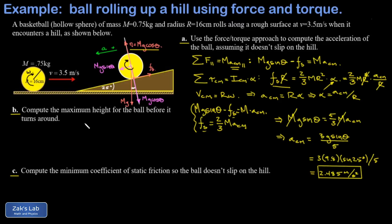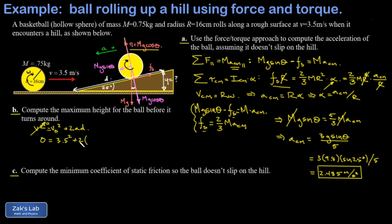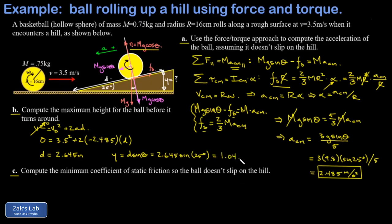For part B, we find the maximum height before the ball turns around. Using 1D kinematics with initial speed 3.5 m/s, final speed zero, and acceleration negative 2.485 m/s²: v² = v₀² + 2ad gives d equals approximately 2.645 meters along the ramp. The height is d sine theta, so 2.645 times sine 25 degrees gives a maximum height of 1.04 meters.